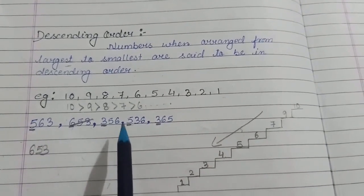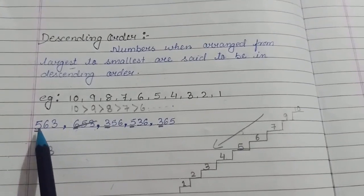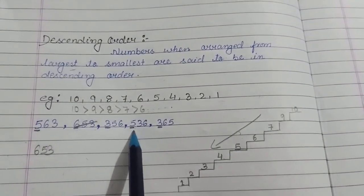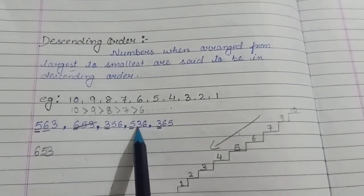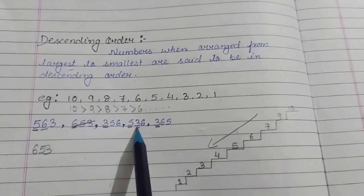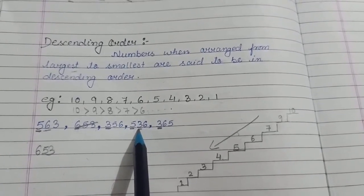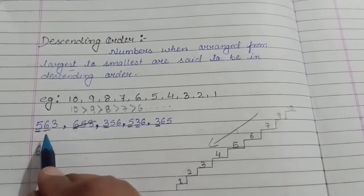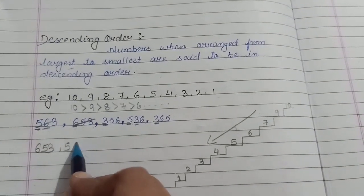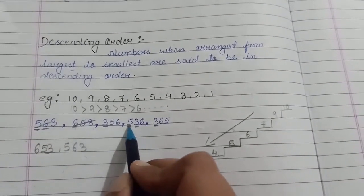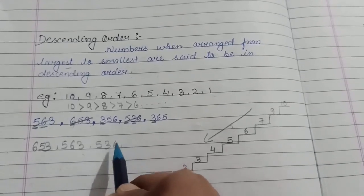Now we will see the second largest number. Here we will find the largest number once again among these numbers. Here it is 5, here also 5. Now we will compare the tens place: here it is 6 and in 536 at tens place 3 is there. 6 and 3 — which is greater? 6 is the bigger number. So we will write 563 and then we will write 536.